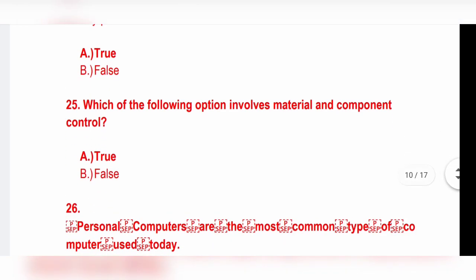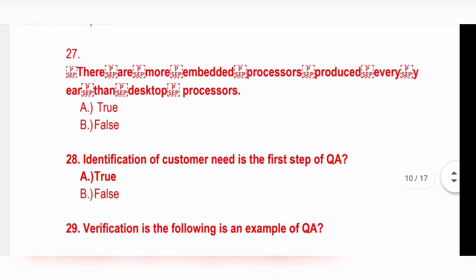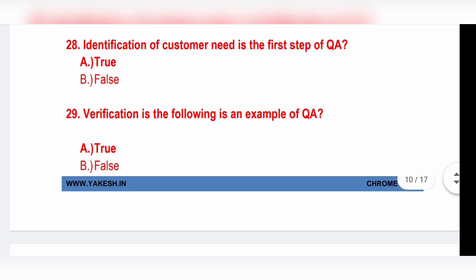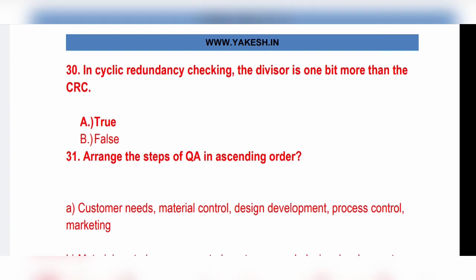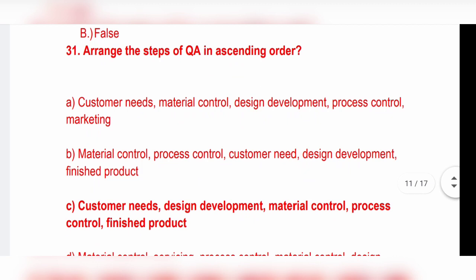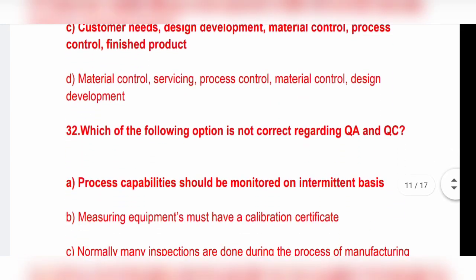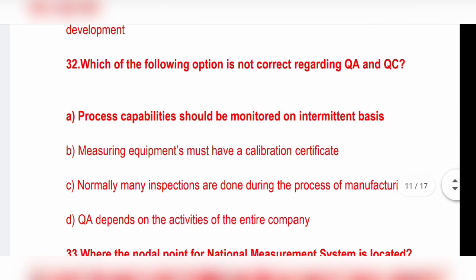Which of the following options involves material and component control? Option A, true. Identification of customer needs is first step of QA. Verification is the following example of QA. Option A, true is the correct answer. In cyclic redundancy checking, the divisor is one bit more than CRC. Option A, true is the correct answer. Arrange the steps of QA in ascending order. Option C: customer needs, design development, material control, process control, finished product. Which of the following options is not correct regarding QA and QC? Process capability should be monitored on intermediate basis. Option A is the correct answer.